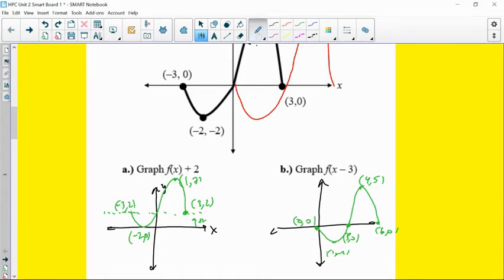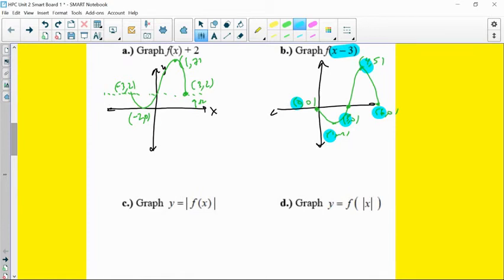Because that x minus 3 here is only affecting the x components. So all the x components slide to the right by 3 units. Excellent. Now let's see what else is on this page. I love part C and part D, because that's exactly what we just talked about.